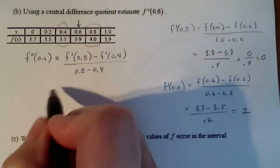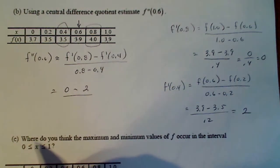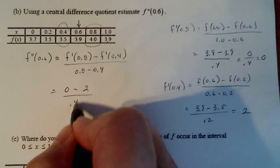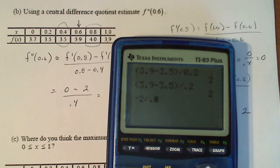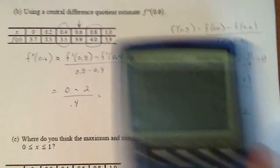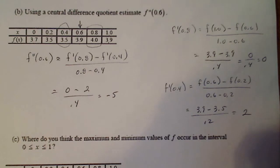So I plug these numbers in here. I get 0 minus 2 divided by 0.4, which gives me negative 2 divided by 0.4 is negative 5. Now there's other ways you could have done this.